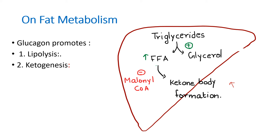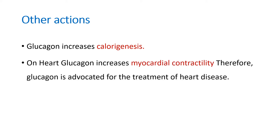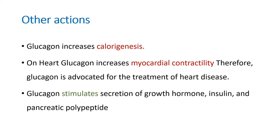So the two effects on fat metabolism are lipolysis and ketogenesis. Among other actions, glucagon increases calorigenesis, and on the heart it increases myocardial contractility — therefore glucagon is used in the treatment of certain heart conditions. It also stimulates secretion of growth hormone, insulin, and pancreatic polypeptide.